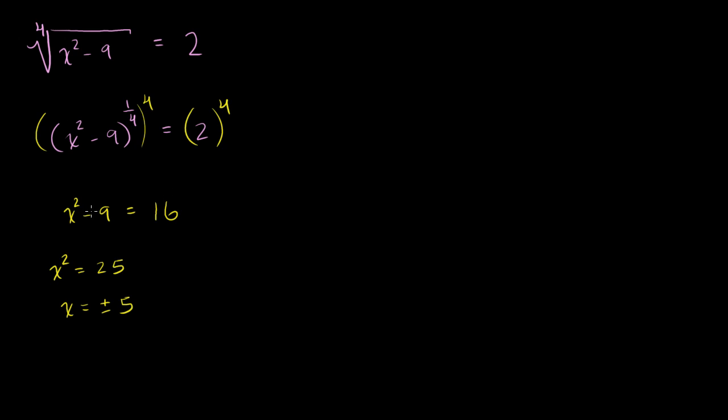So what you do is you subtract 16 from both sides of this equation. If you do that, you get x squared minus 25, if we subtract 16 from both sides, is equal to 0.